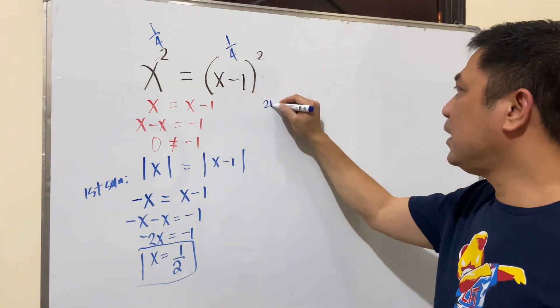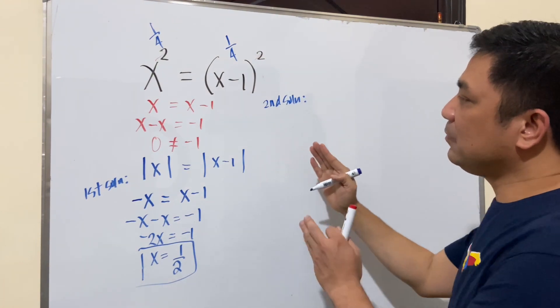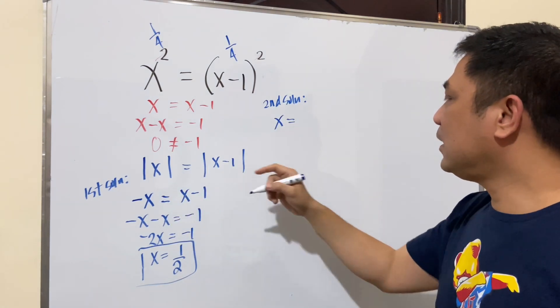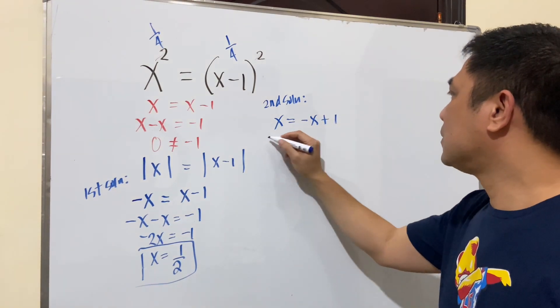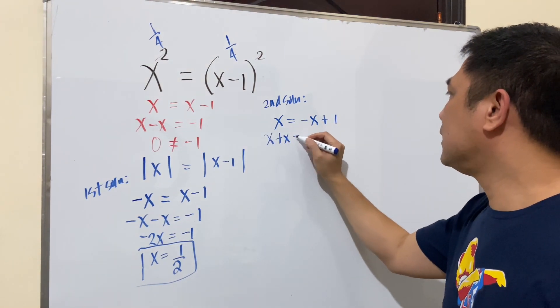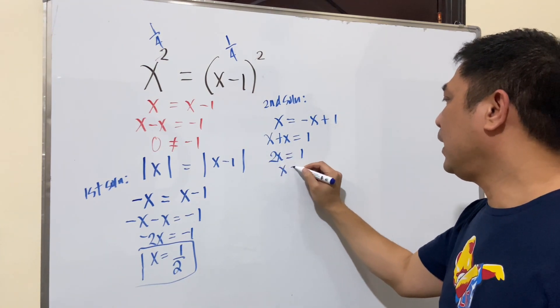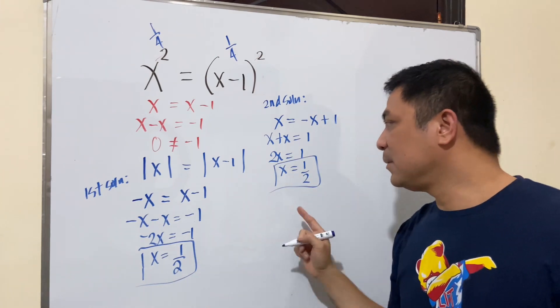So the second solution here, let's see if we'll try to keep the left side the same, x. But we will change the right side. So negative x plus 1. So this one is x plus x is equal to 1. So 2x is equal to 1. x is also the same as 1 half. So same here.